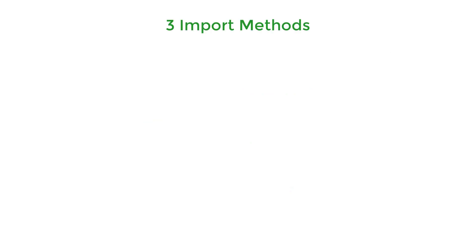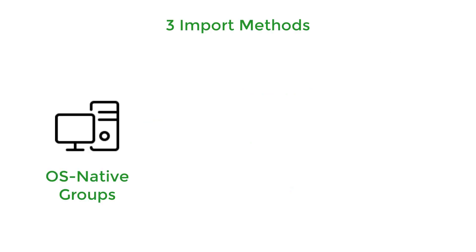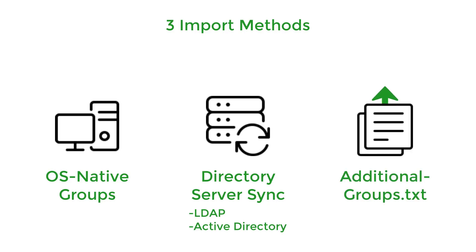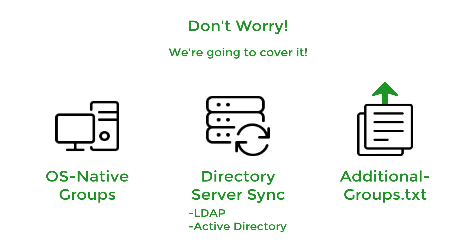Groups in PaperCut can come from three different kinds of sources. First, they can come from the local groups that are stored on the operating system of your application server. Alternatively, you can sync them in from a directory source using LDAP or Active Directory. And lastly, you can import them via the additional groups text file. If you're still not sure which of those options is going to fit your organization best, don't worry — we're going to be covering them in a bit more detail in the next couple of minutes.